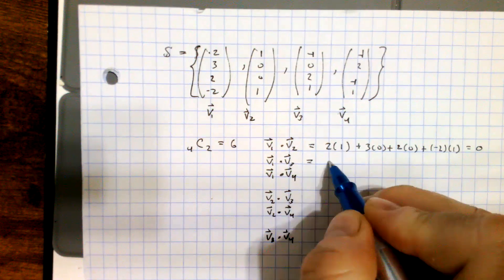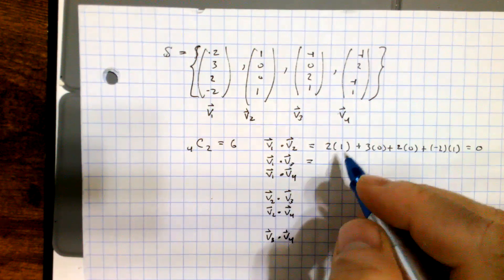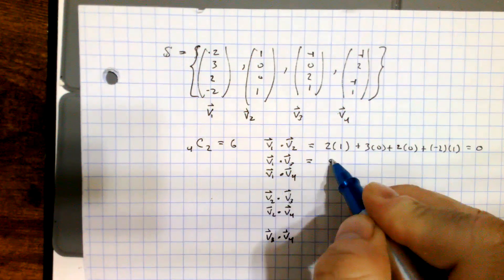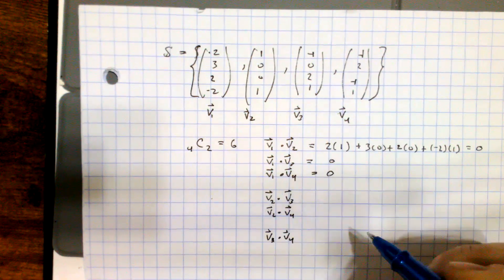Carrying out each of the products like this in general for B1, B3, and B1, B4, they also equal zero.